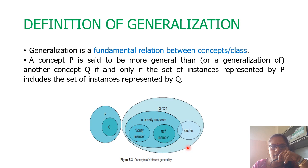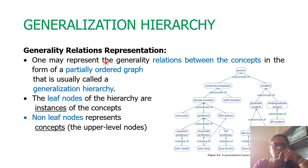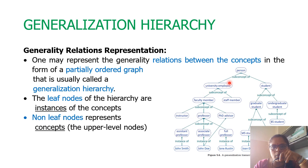An example here shows that a staff member is a university employee who is also a person. So person is more general and staff member is more specific. The generalization hierarchy is used for representing generality relationships between concepts in the form of a graph — and remember, this is not a complete graph, it is a partially ordered graph. In this generalization hierarchy, the leaf nodes represent the instances of the concepts, and the non-leaf nodes — anything above — are at the upper level and represent the concepts. Individuals become the leaf nodes, and the more general items become the non-leaf nodes.